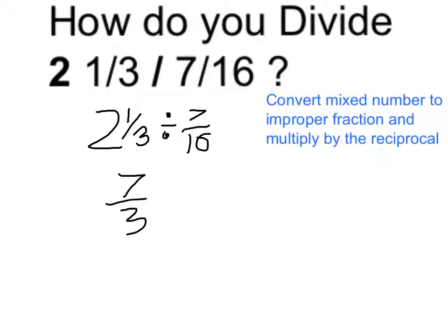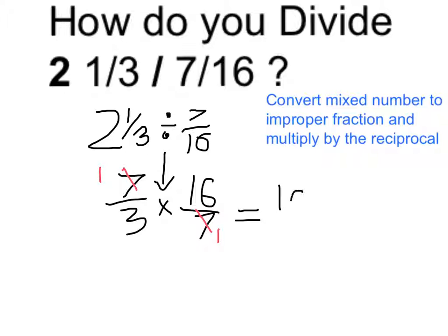And the reciprocal of 7/16 is going to be 16/7. Because I flipped it, I can change my division to a multiplication. Now these are going to cancel out pretty nicely, because the 7 cancels with the 7 here, leaving me with just a 1 and a 1. So when I multiply, on the top I get 1 times 16, which is just 16.